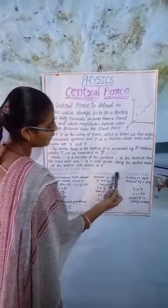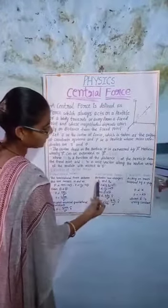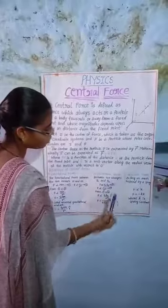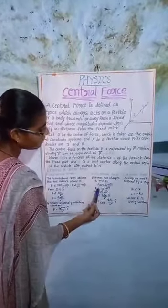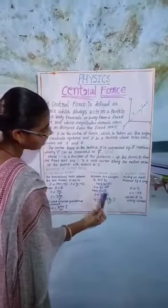The second example of central forces is electrostatic force between two charges. Here we have Q1 and Q2 as two charges. The force is proportional to the product of the charges and inversely proportional to the distance between them, that is R squared.